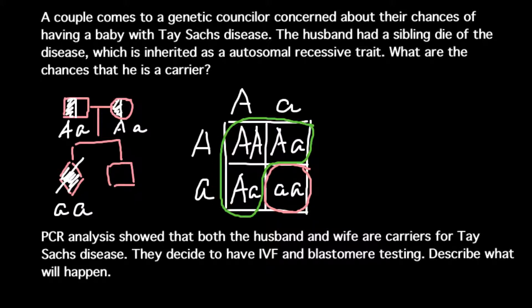The reason it is not two out of four is that the 'aa' genotype is phenotypically distinctive from the others — we can eliminate that possibility since this sibling is phenotypically normal. So we have to find the probability of being a carrier within the phenotypically normal group only. As you can see, the probability is two out of three. This is our answer: two out of three is the probability for this person to be a carrier, or to have the genotype 'Aa'.